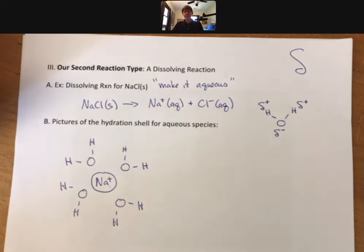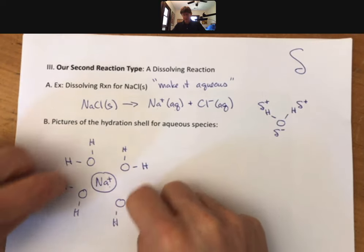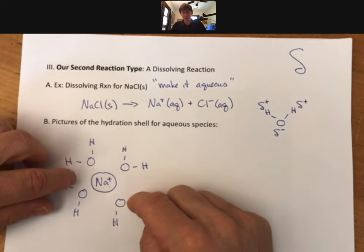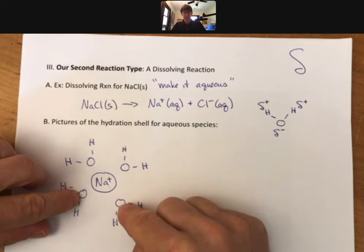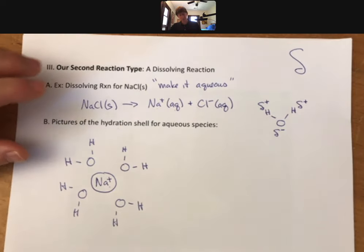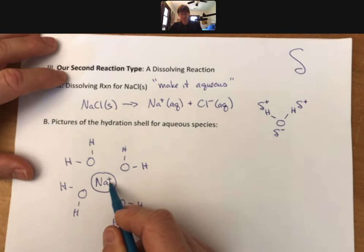This is a static or non-moving picture of a dynamic process. In reality, these water molecules are moving around all the time. But on average, the oxygens are closer than the hydrogens to the sodium ion. So this is a picture of a hydration shell for sodium. The oxygens have to be closer than the hydrogens.